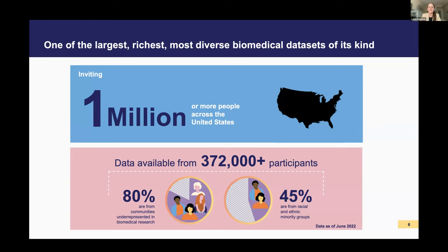The program captures a wide variety of data types, including survey responses, physical measurements, electronic health record data, genomic data, and even data from Fitbit wearables. It's also a longitudinal dataset, so it follows participants as they move, age, get sick, and try out different treatments. Data on this slide is from June 2022, but updated numbers show over 618,000 enrolled participants with over 450,000 completing the initial steps of data collection.